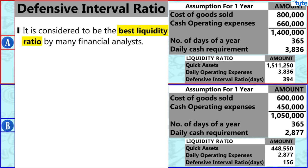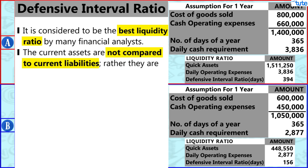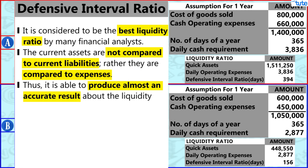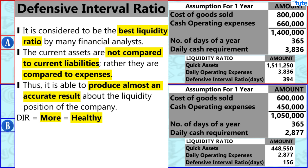Defensive Interval Ratio is considered to be the best liquidity ratio by many financial analysts. In the case of DIR, the current assets are not compared to current liabilities; rather they are compared to expenses. Thus DIR is able to produce almost an accurate result about the liquidity position of the company. If the DIR is more in terms of days, it is considered healthy for the company, and if the DIR is less, it needs to improve its liquidity.